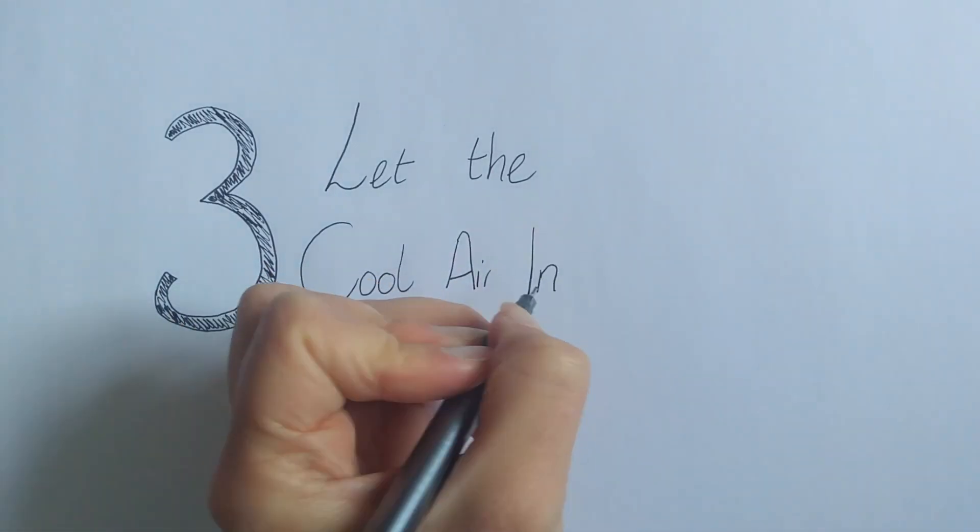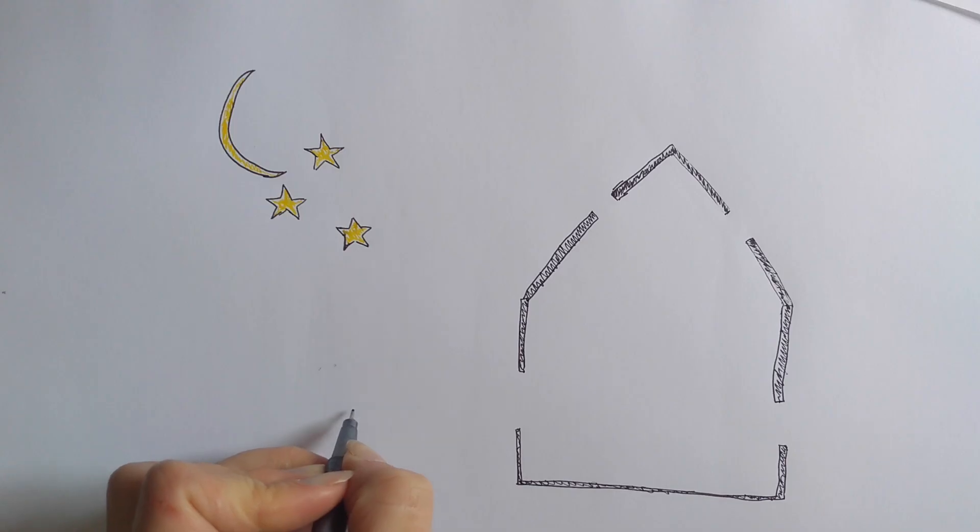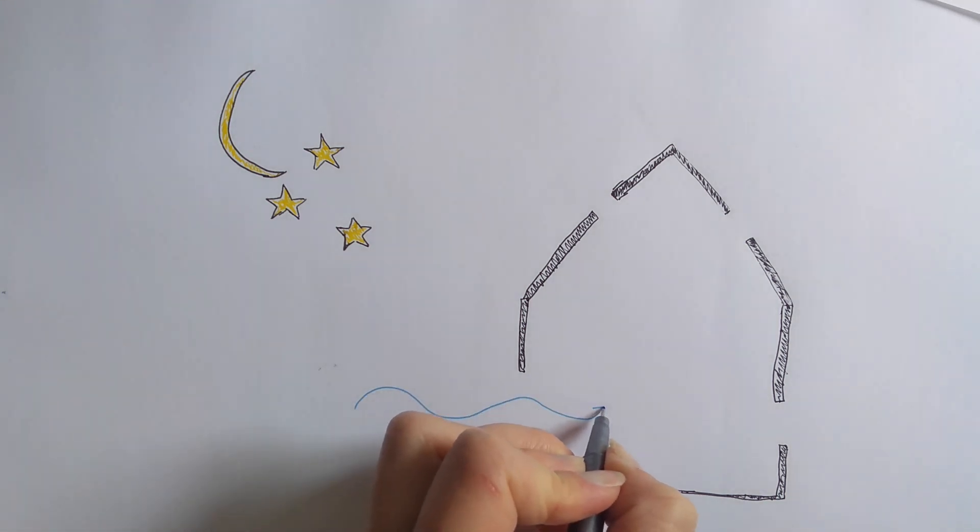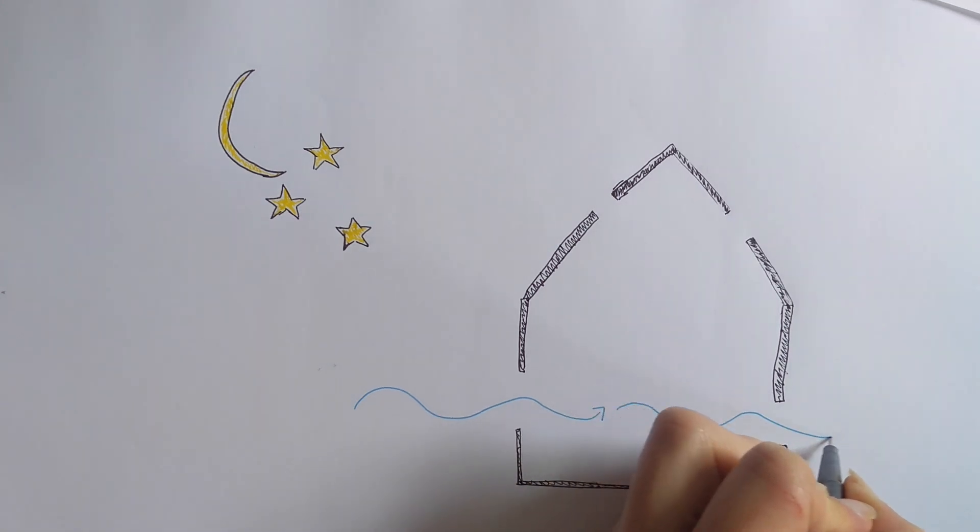Number three, let the cool air in. Open the windows when it's cooler outside in the evening, early morning and overnight if it's safe. If possible, open windows on different sides of your home to help the air flow through.